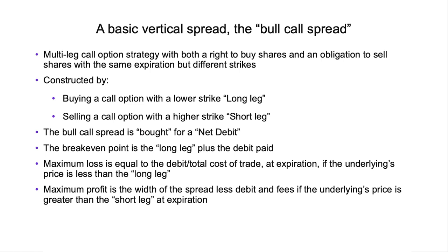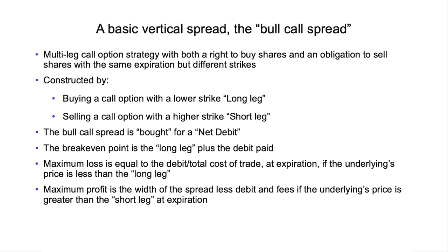As I illustrate this with examples, you'll see exactly why you'll be pleased if the stock goes up to the point that you have to fulfill your obligation on your short leg. The bull call spread is bought for a net debit — we're going to be spending money in our account, hoping that by expiration we will be getting back more money than what we spent. To calculate the break-even point, we take the long leg strike and add to it whatever debit we paid. That's the break-even point at expiration.